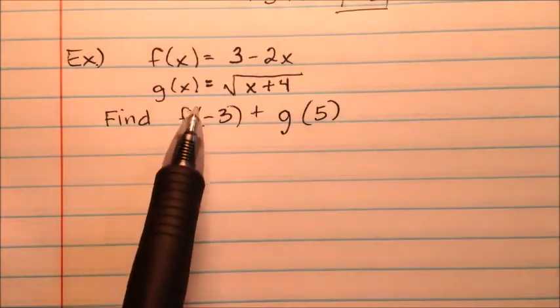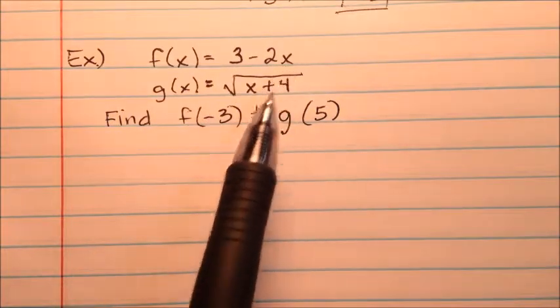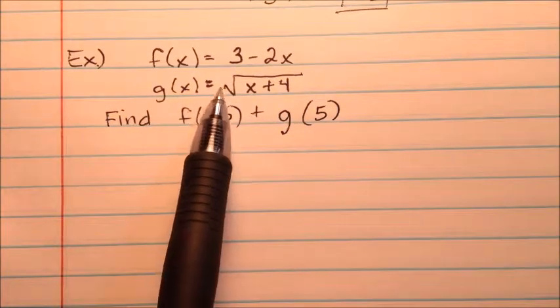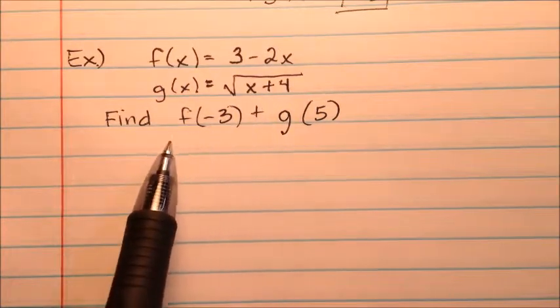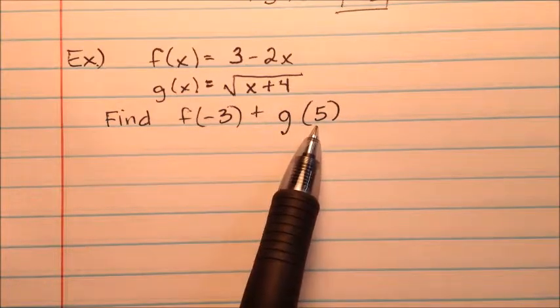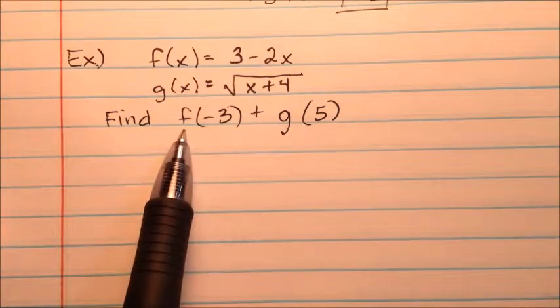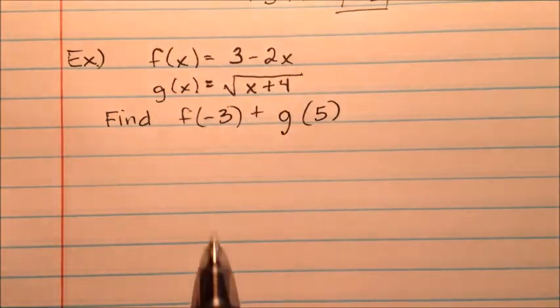In this second example, we have two new functions. f is defined as 3 minus 2x, and g is defined as the square root of this quantity x plus 4. So we're going to find f(-3) + g(5). That means we're going to evaluate f at negative 3, so we're going to plug negative 3 into our f function.